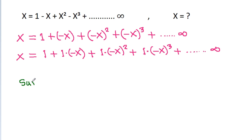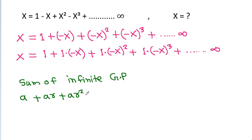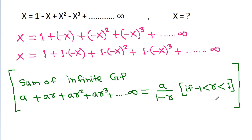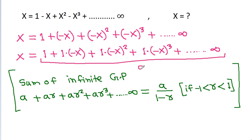The sum of an infinite GP: a plus ar plus ar squared plus ar cubed plus up to infinity equals a divided by (1 minus r), if r is less than 1 and greater than minus 1. Here, a is 1 and r is minus x.